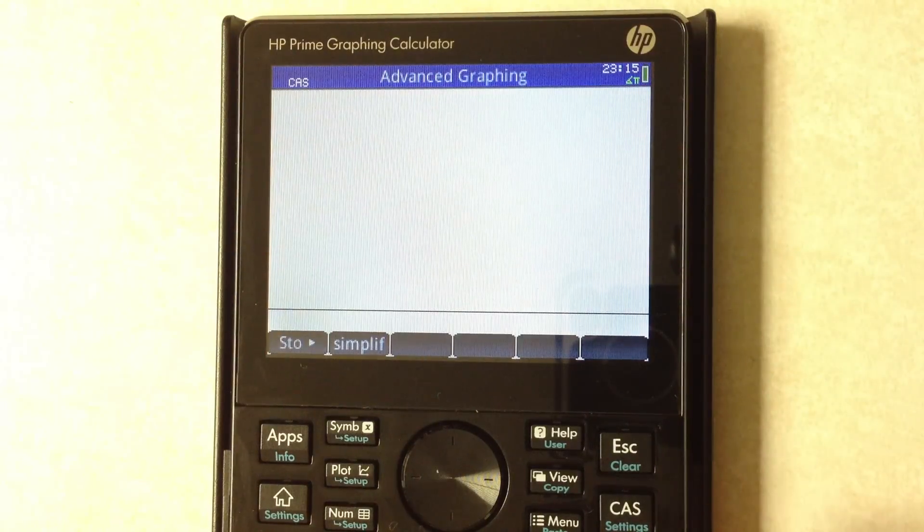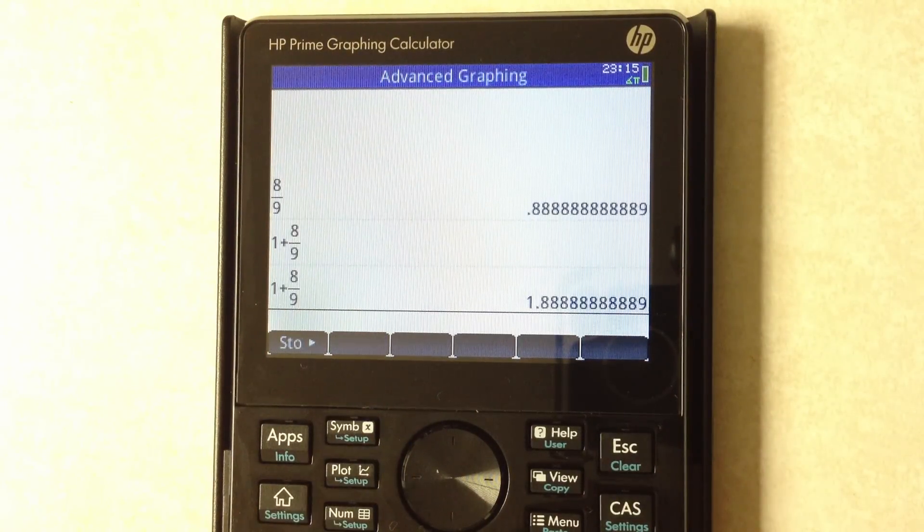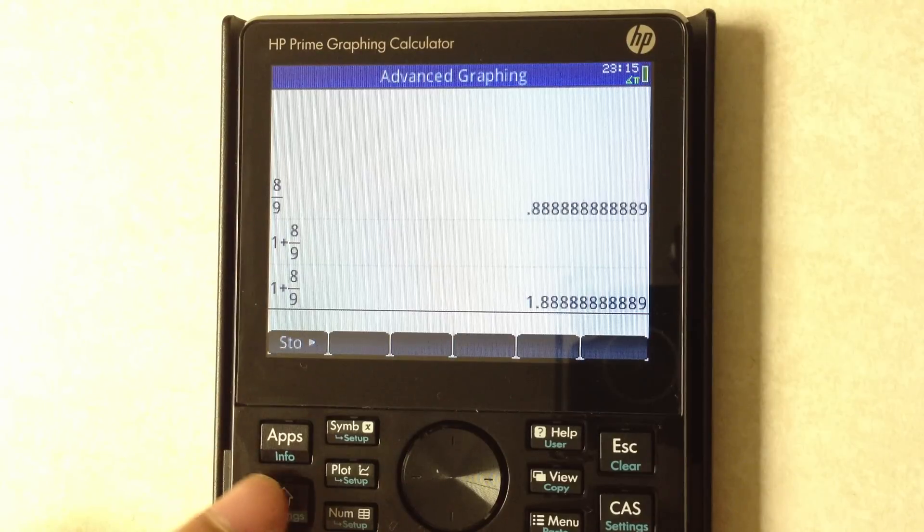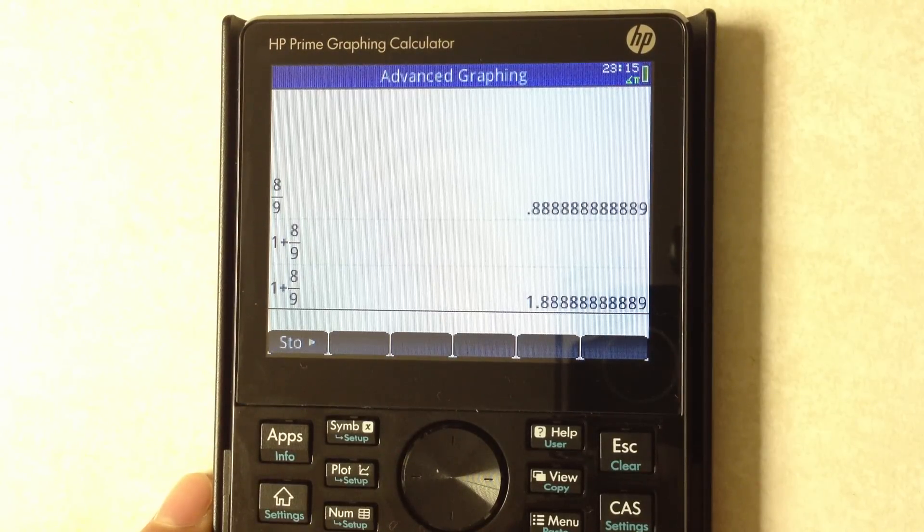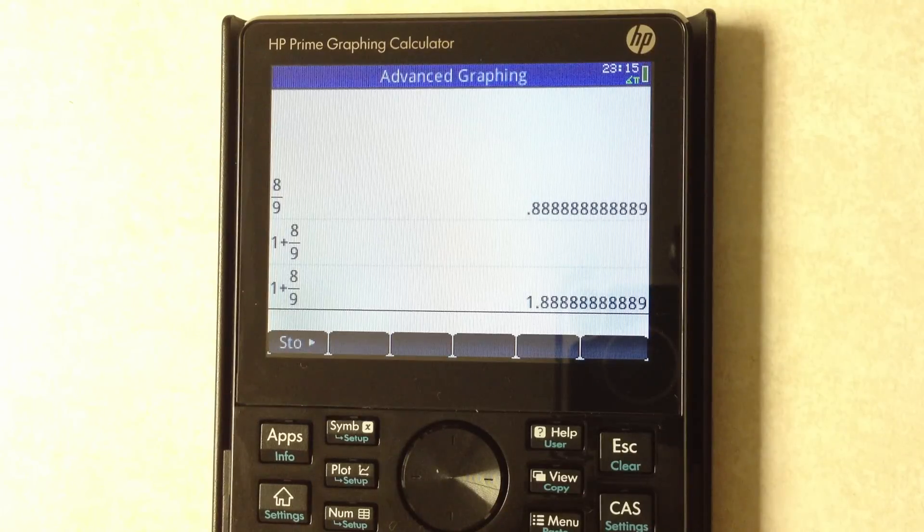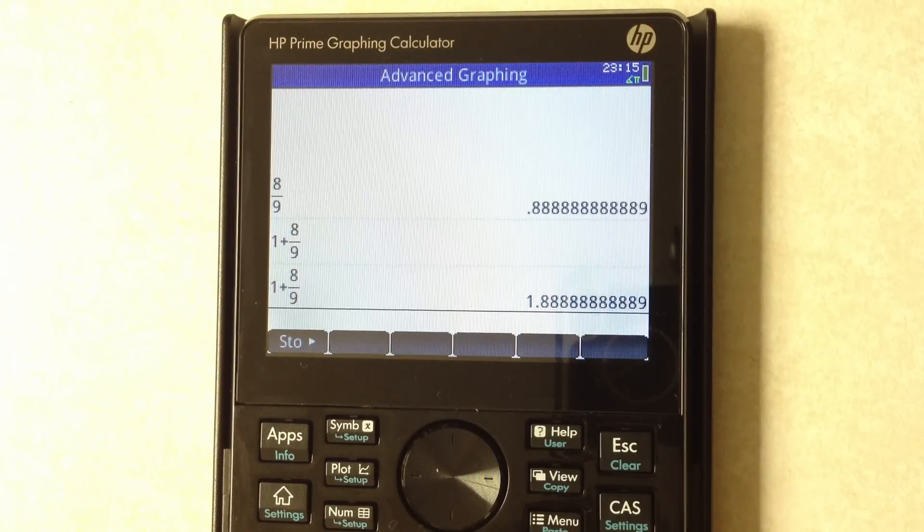So that's the textbook entry. You can actually change it to algebraic entry or even RPN for those of you who are more familiar with the older HP calculators.